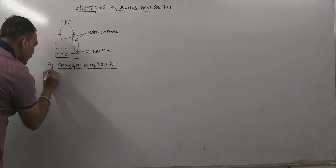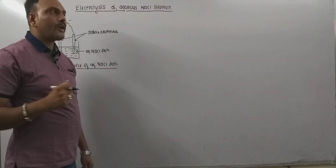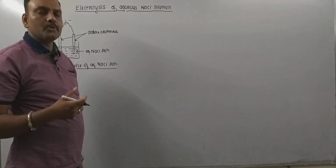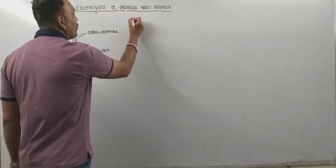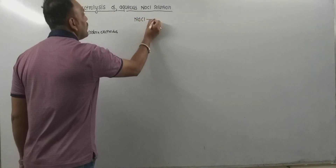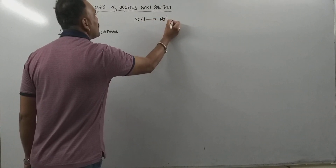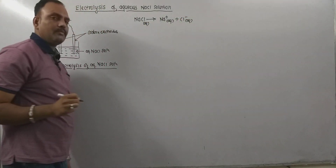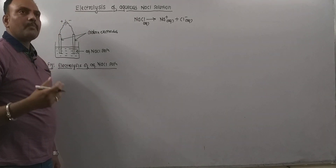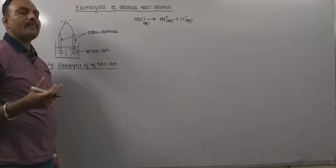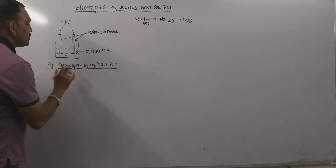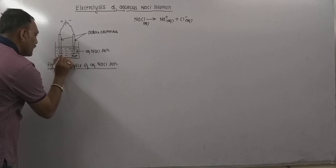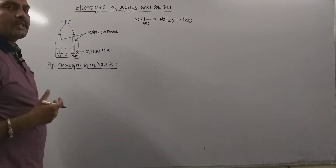When we add sodium chloride to water, water acts as a solvent with a high dielectric constant, which facilitates ionization. Thus NaCl undergoes dissociation producing Na⁺ and Cl⁻ ions in aqueous solution. Oppositely charged ions get attracted to opposite electrodes: sodium ions migrate towards the negatively charged electrode and chloride ions migrate towards the positively charged electrode.